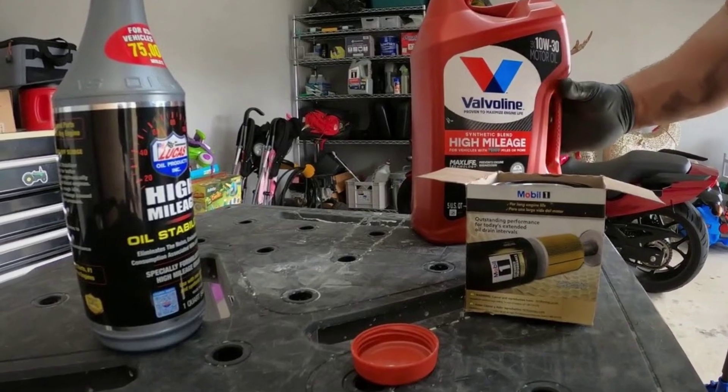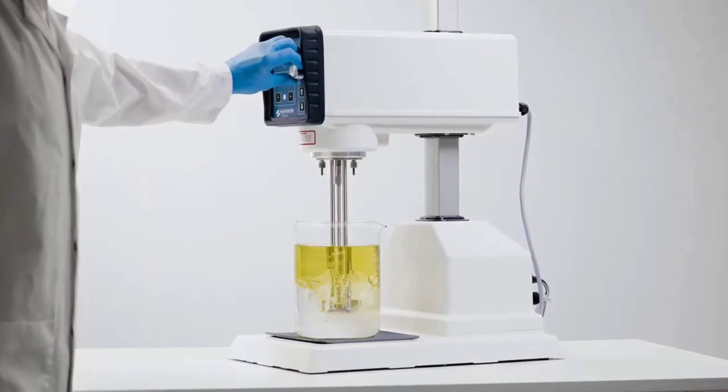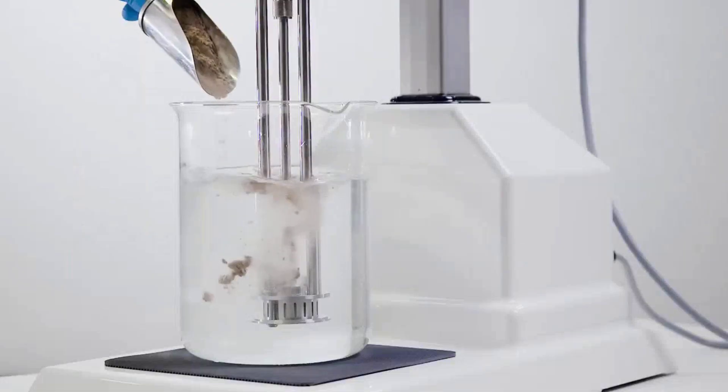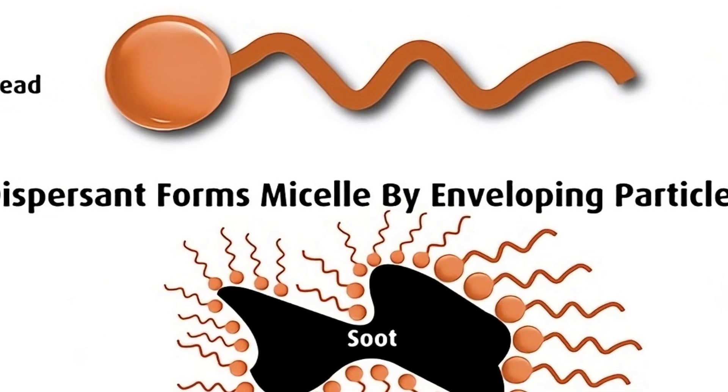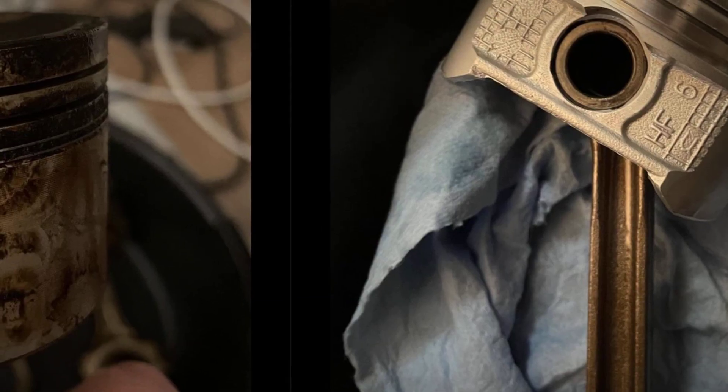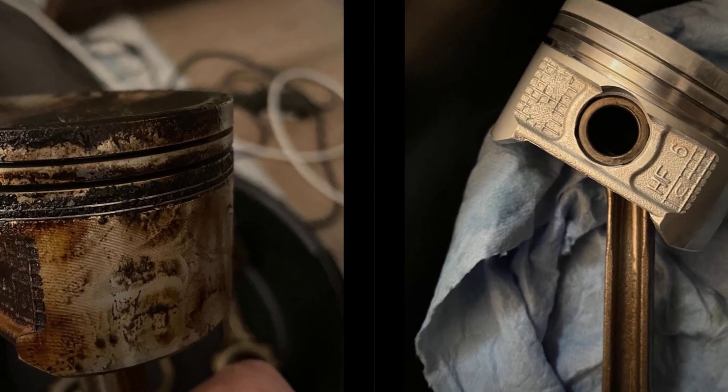But it is not just about wear. The detergent and dispersant package in Valvoline's formula stands out for its strength, helping to hold soot, carbon, and varnish in suspension so they do not settle and bake onto pistons or rings.